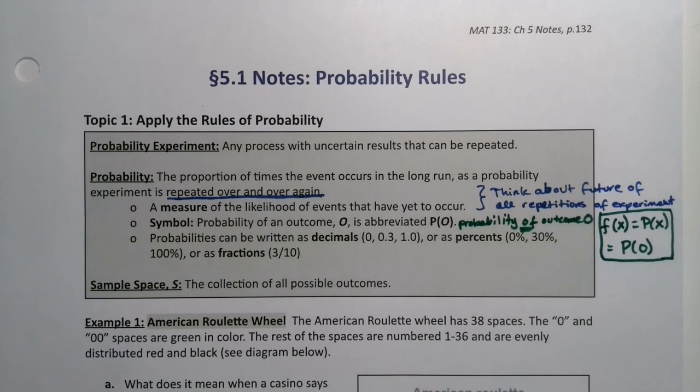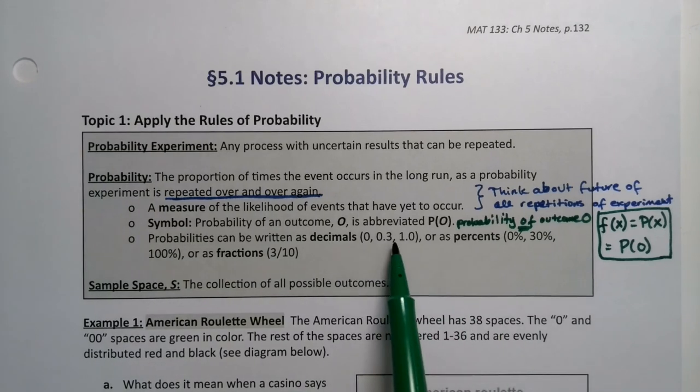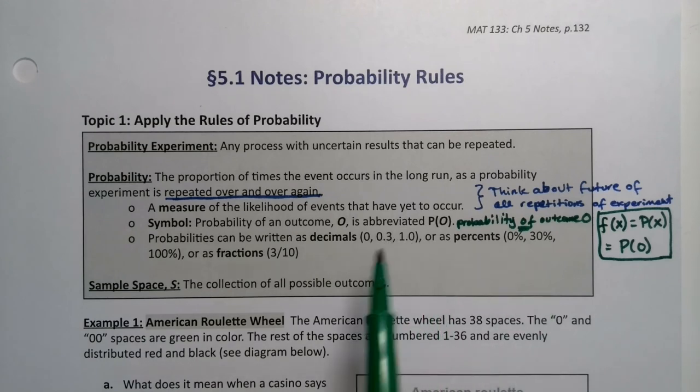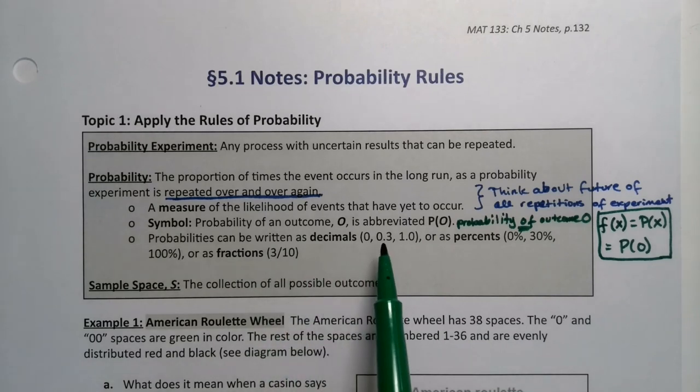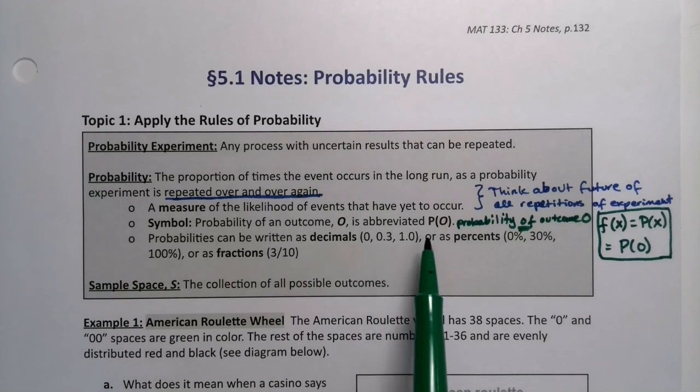We can write probabilities as decimals, percents, and fractions. Percents essentially are decimals, the decimal point's been moved two spots over. So 0.30 is 30%, 1 is 100%, and so on. We can write them as fractions. 3 divided by 10 is the same thing as 0.3. Each of these has their uses.